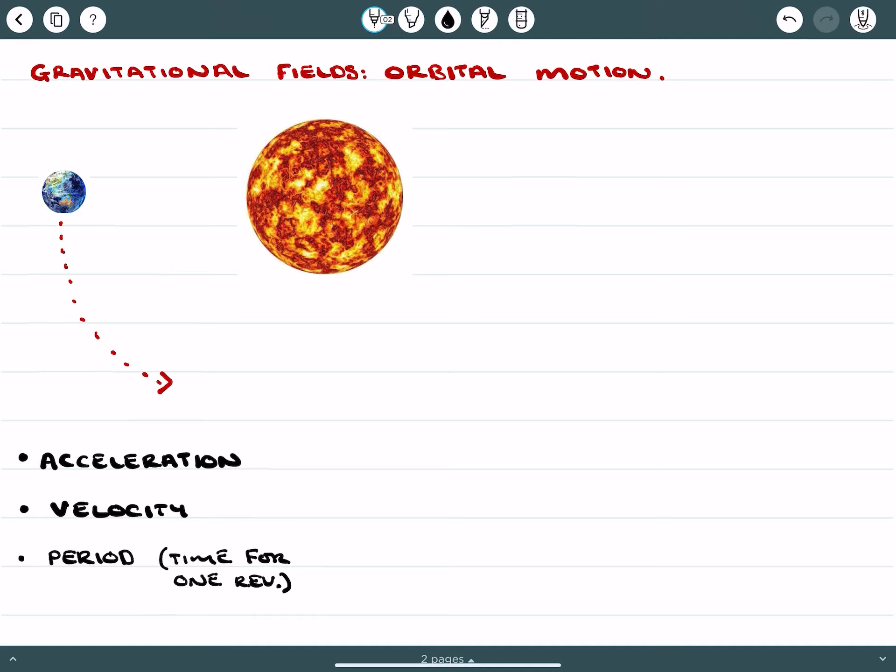So we can go back to Newton's universal law of gravity and we can say mass one, mass two, all over the distance in between them. When we're talking about the Sun and the Earth system, our mass one would be our smaller mass which is the Earth, and our mass two is the larger body which is the Sun, and the radius is taken from the center of both masses.